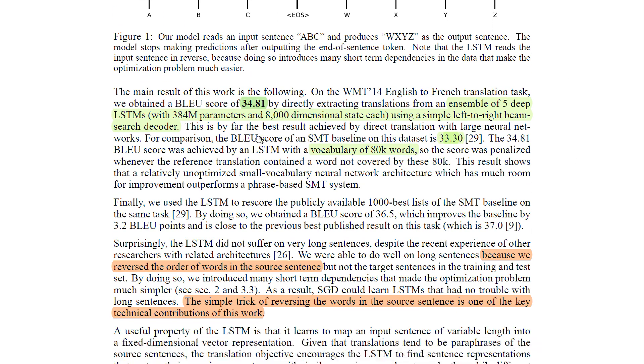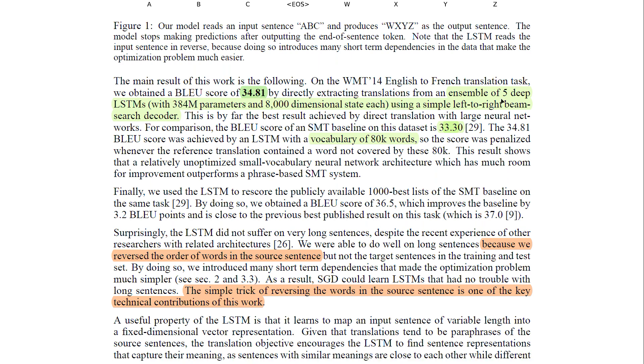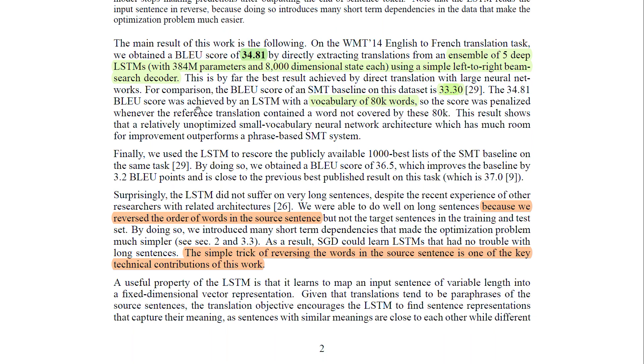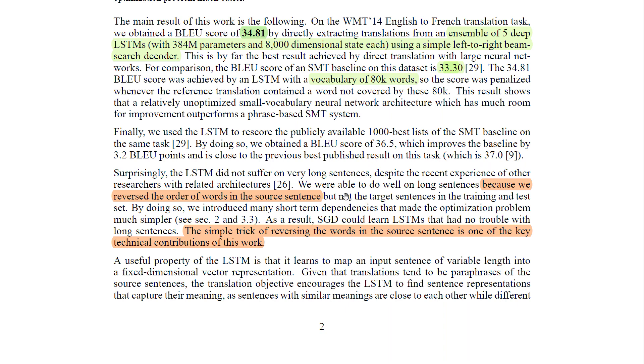So then they say the main result is that they obtained a blue score of 34.8. And they used an ensemble of five deep LSTMs model with 348 million parameters and 8000 dimensional state each. And they also used a beam search decoder. And then they again emphasize this point that they reversed the order of the words. And they believe this had some introduced better short term dependencies. But the neural papers don't use this trick that often. So I'm not going to emphasize this point.